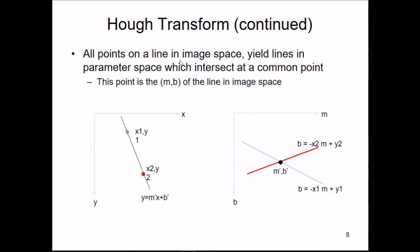Hough transform states that all points on a line in image space yield lines in parameter space that intersect at a common point. So the basic idea is: given various points through which I want a line to pass, go to parametric space and find the point where all those parameter-space lines intersect — that intersection corresponds to the line in image space.